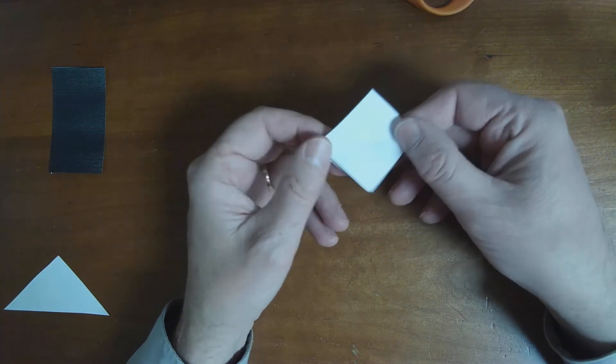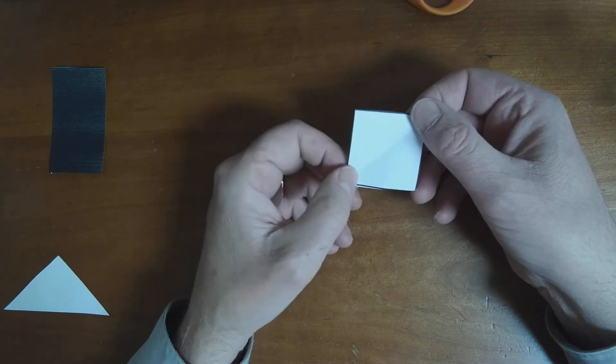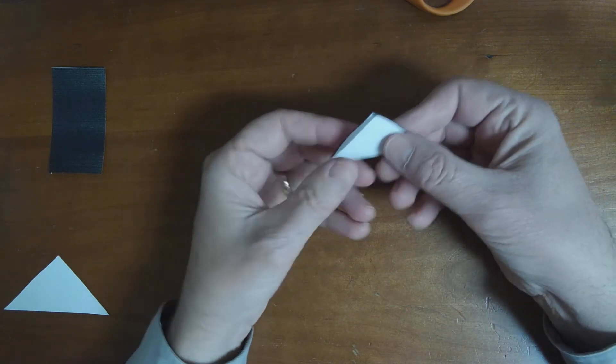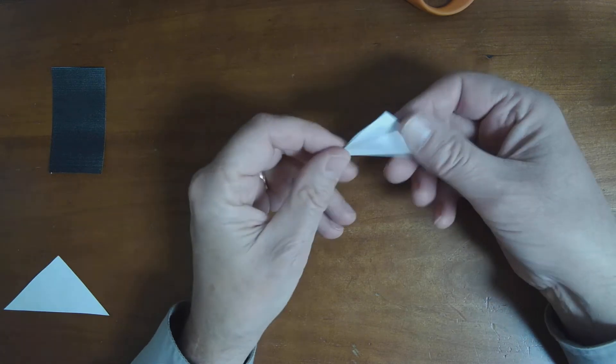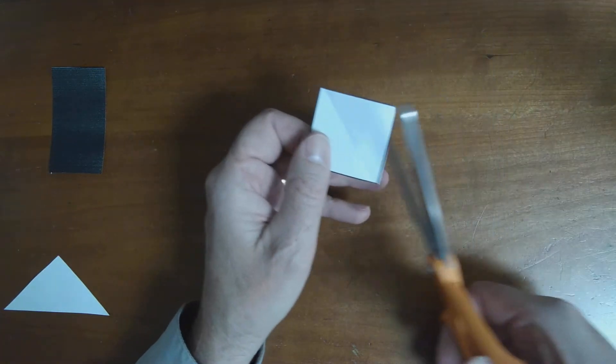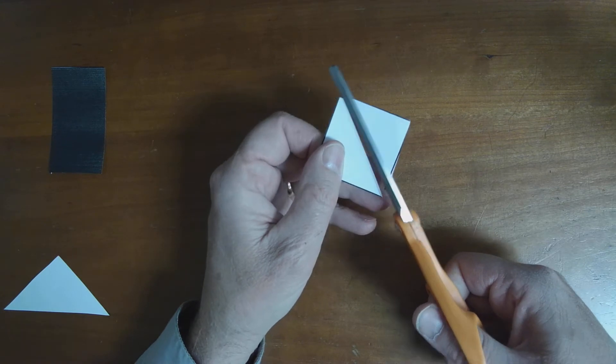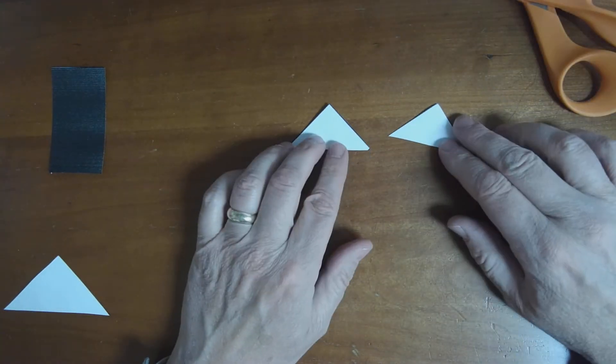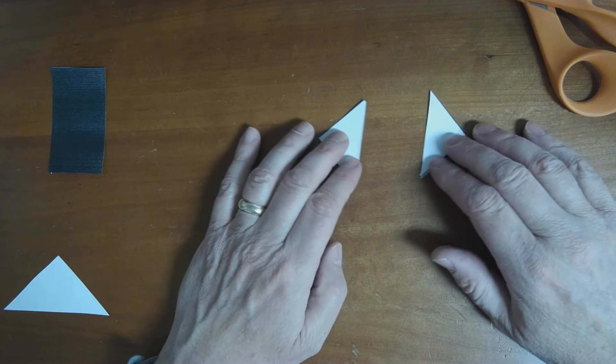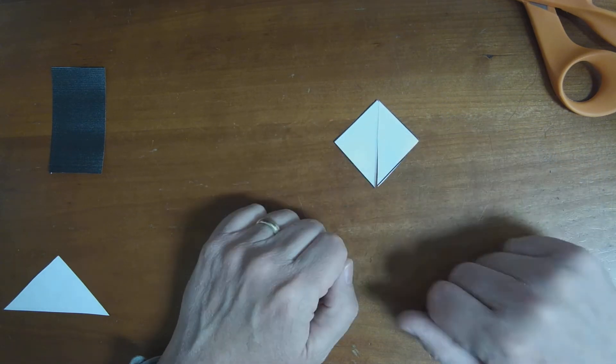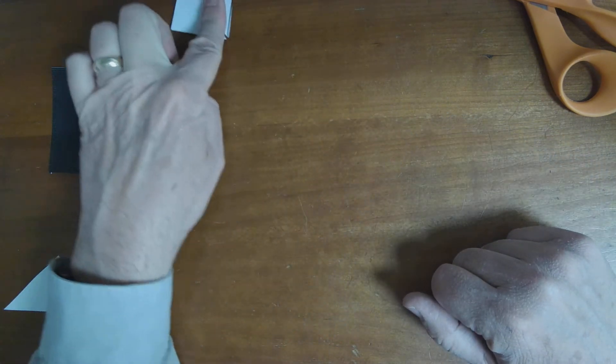Instead of a square, all of a sudden, I have a triangle. And in fact, if I were to cut this in half, like that, I would end up with two triangles, didn't I? And I can put them together to make a square, okay?